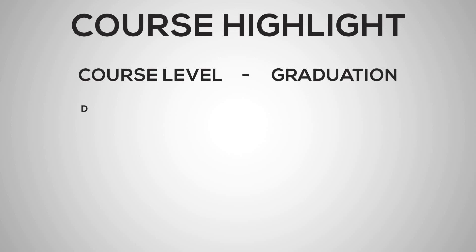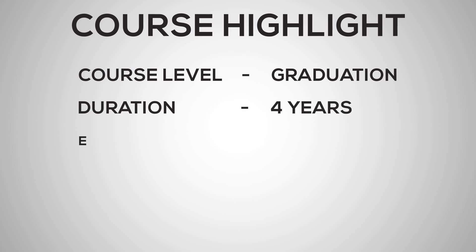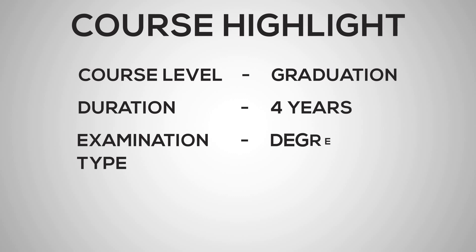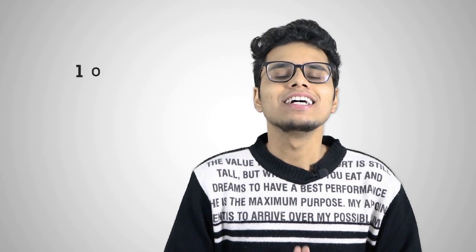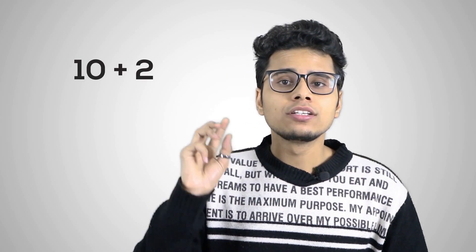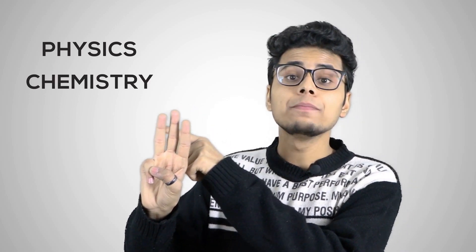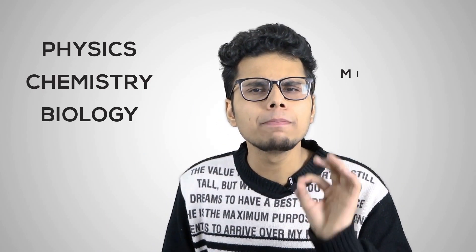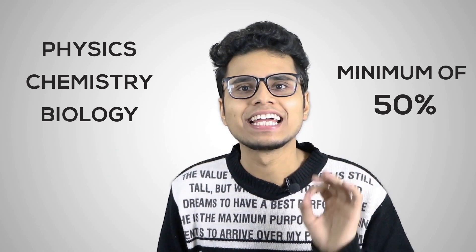The course highlights: the level of this course to become a bioinformatics engineer is graduation. The duration of this course is four years. The course type is a degree. The eligibility to pursue this course is 10+2, that is 12th standard. All students must have passed their 12th exam with three main subjects — physics, chemistry, and biology — with a minimum of 50% aggregate.